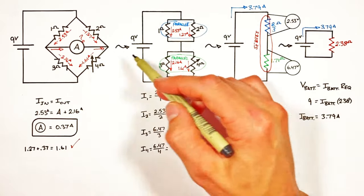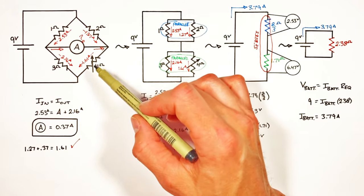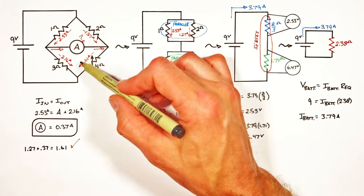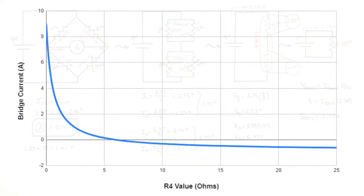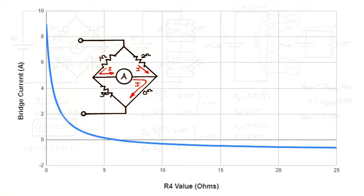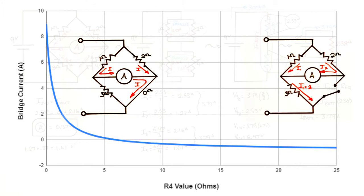The 4 ohm resistor was drawn as a variable resistor. Looking at a graph of current through the ammeter as a function of the variable resistor: when the variable resistor is zero ohms it acts as a short, bypassing the 3 ohm resistor — all current through the 1 ohm resistor passes through the ammeter. At infinite resistance it acts like an open switch, meaning the ammeter measures the current passing through the 2 ohm resistor instead.